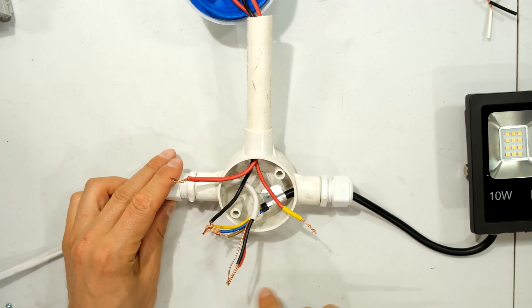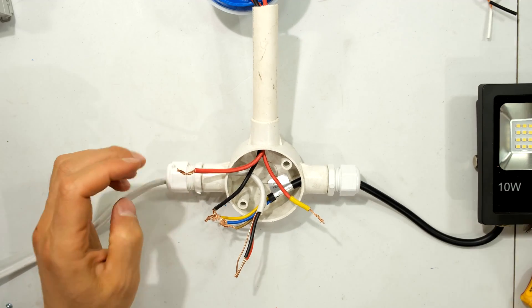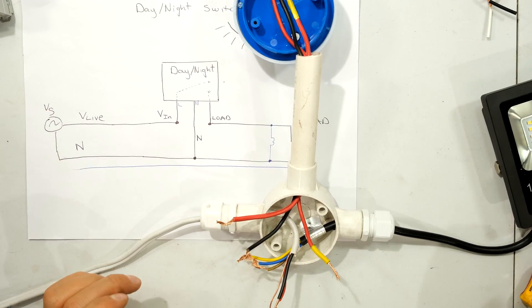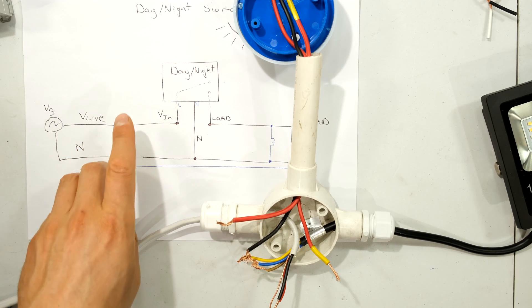Now I've got to wire all these wires in the correct order. Now the first thing is just to look back at the diagram. Now having a look at the diagram, I can see that I've got a live wire going into my day-night sensor.